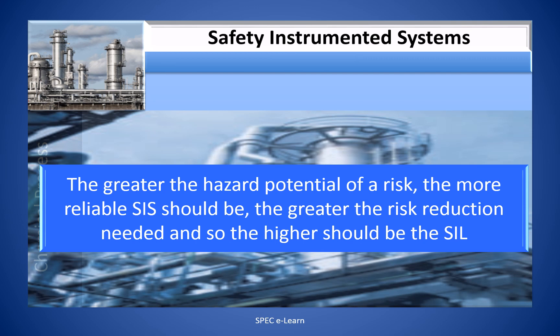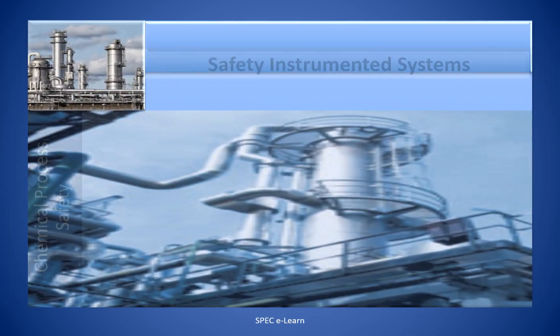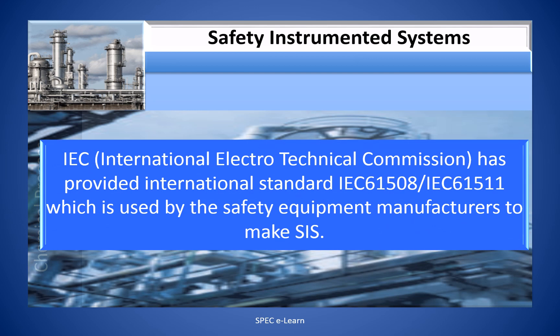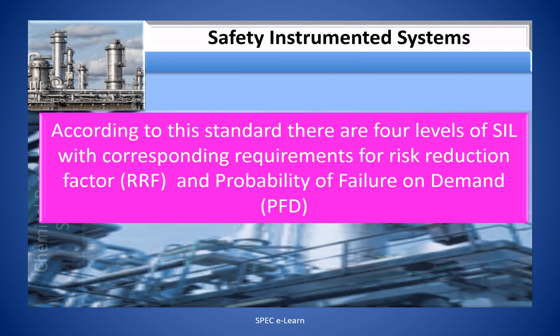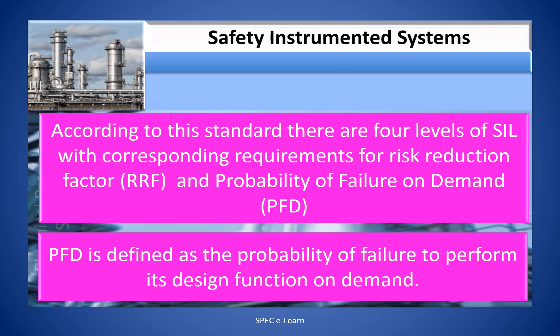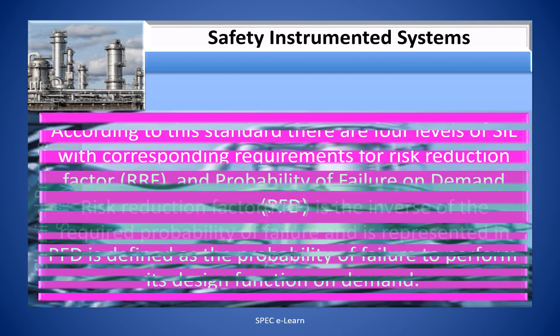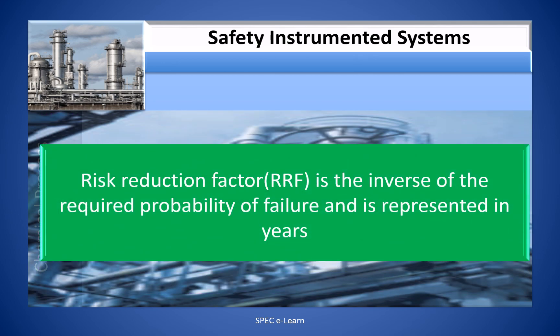The greater the hazard potential of the risk, the more reliable the SIS should be. The greater the risk reduction needed, the higher the SIL required. IEC — the International Electrotechnical Commission — has provided international standards IEC 61508 and IEC 61511, which are used by safety equipment manufacturers to design SIS. According to this standard, there are four levels of SIL. The Risk Reduction Factor, RRF, and Probability of Failure on Demand, PFD, are defined — where PFD is the probability of failure to perform its design function on demand, and RRF is the inverse of PFD, represented in years.